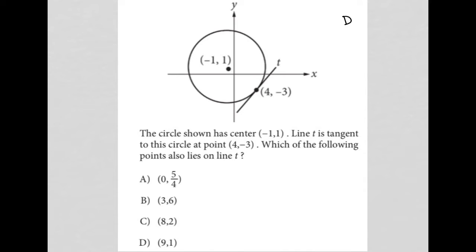So, this question is a diagram question. Any question that provides some visual input, I'm going to call a diagram question. So, we have what looks like a circle here. We have a point — this is maybe the center. Let's just read the question first. So, this says the circle shown has center negative 1, 1, which we see right there. Line T is tangent to this circle at point 4, negative 3, which we see line T and the point of tangency right here. Which of the following points also lies on line T?